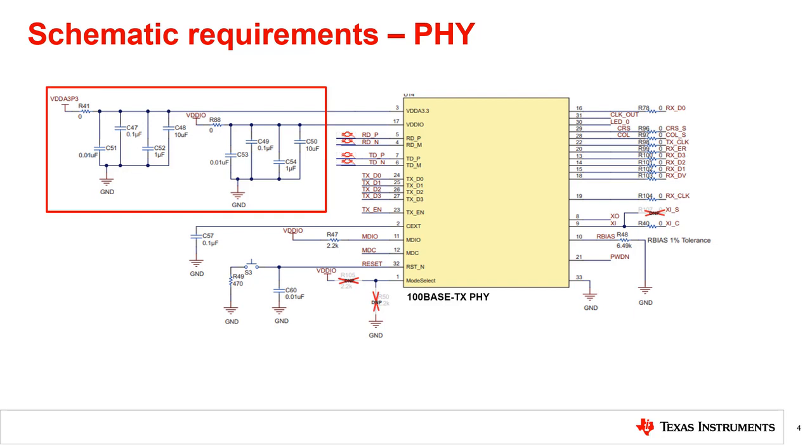First, you'll need to verify the correct voltage rails are connected to the core and I-O pins. You'll also need to ensure that the decoupling capacitors on the supply match the datasheet requirements. Typical footprint sizes used for the decoupling capacitors are 0402s or 0201s. In the future, when beginning the layout, you'll need to ensure the capacitors are placed very close to the PHY.